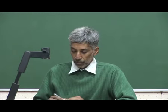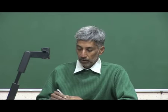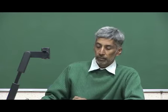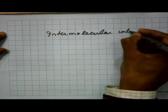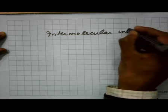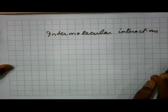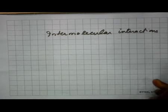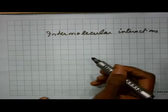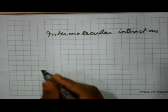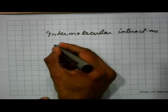Welcome back. We have for the past three classes been discussing states of matter, where we looked at different kinds of intermolecular interactions. At this point one should be able to, given a molecule, identify what the intermolecular interaction is present and also deduce, given a list of molecules, how to arrange them in order of some physical property. Now what we will do is to look at properties of gases.